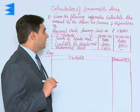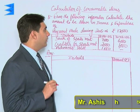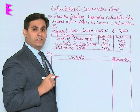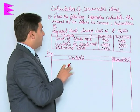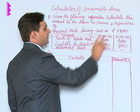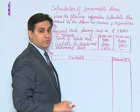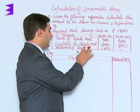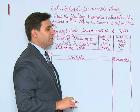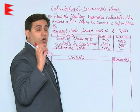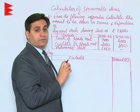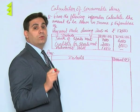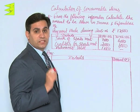Moving ahead, in this question we are required to calculate the amount to be shown in income and expenditure account for the year. The payment made during the year 2005-06 is 17,000, and the stock of sports material, creditors for sports material, and advance paid for sports material is given. On adjusting these figures we are required to calculate the amount that should be taken as an expense for this year.